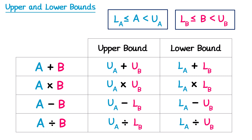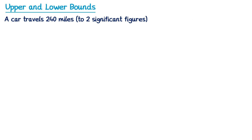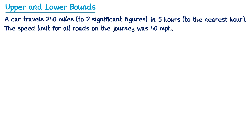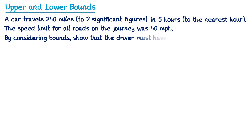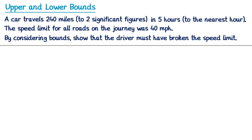Now let's have a look at a few more questions. A car travels 240 miles — to two significant figures — and it takes 5 hours, to the nearest hour. The speed limit for all roads on the journey was 40 miles per hour. By considering bounds, show that the driver must have broken the speed limit. As always, we're first going to write down the error intervals for the information we're given.